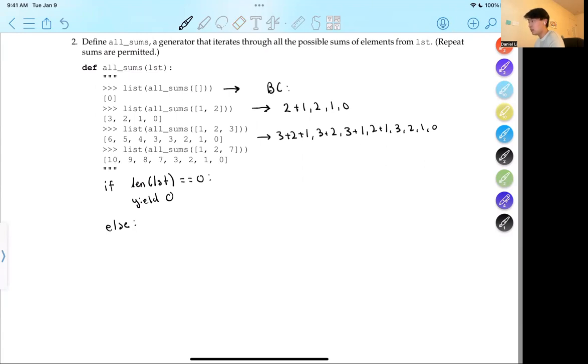So I'm going to have for sum in all sums, this is my recursive call, and I'm going to go through all the elements in the list except for the first one, list one down to the end. And then what I'm going to do is going to yield the sum plus the first index of our list, and then also another sum without the first index of our list.